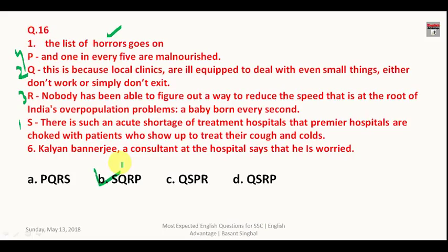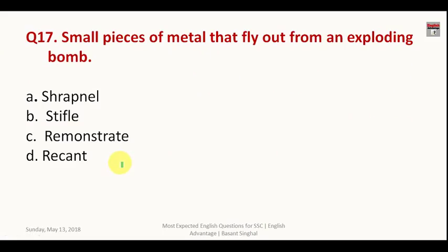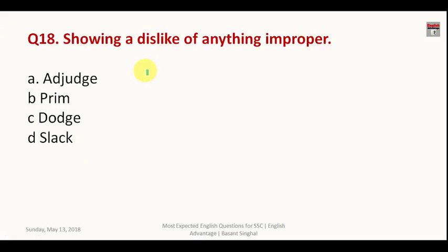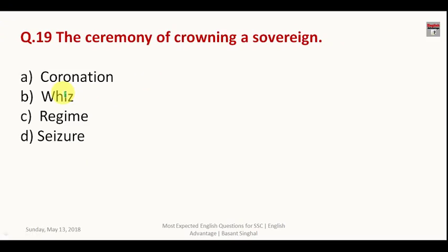One-word substitution questions. Question seventeen: 'Small pieces of metal that fly out from an exploding bomb' — the answer is 'shrapnel'. Question eighteen: 'Showing a dislike of anything improper' — the answer is 'prim'. Question nineteen: 'The ceremony of crowning a sovereign authority' — the answer is 'coronation'.